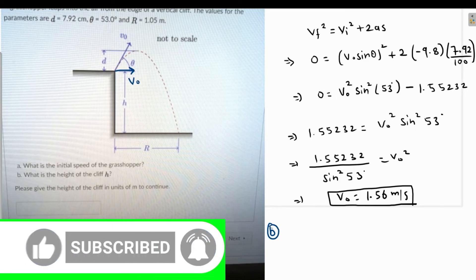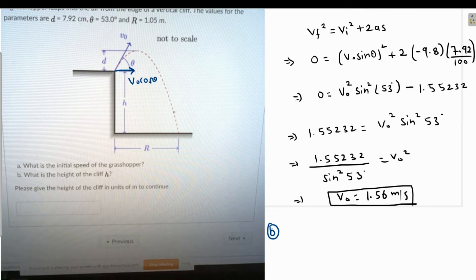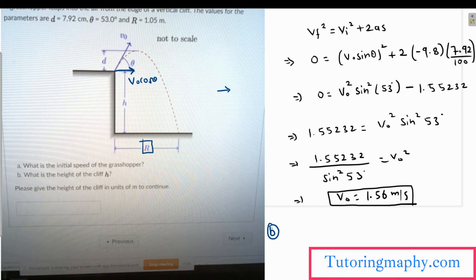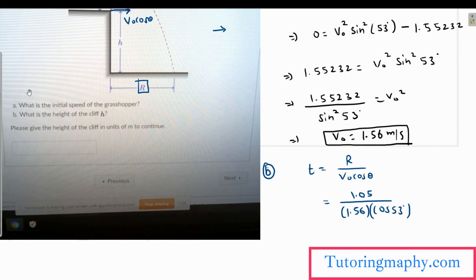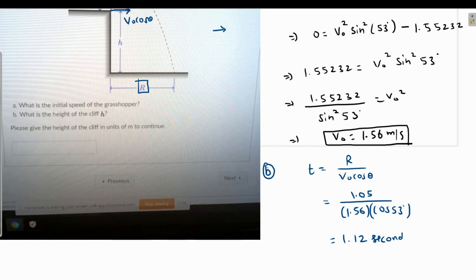That's v naught cosine of theta. Since there is no acceleration towards the horizontal side, the time is nothing but the distance R over the horizontal speed, which is v naught cos theta. So R is 1.05, v naught we found as 1.56, and theta is 53 degrees. The time of flight comes out as 1.12 seconds up to two decimal places.